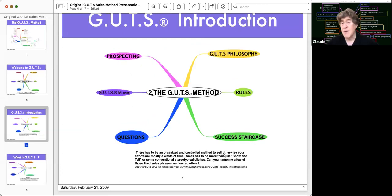There has to be an organized control method to sell, otherwise your efforts are mostly a waste of time. Sales has got to be more than just show and tell, or some conventional stereotypical cliches. Can you think of a few of these tired phrases and things that salespeople use? They use scripts, they ask for the order five times or more, they give premature presentations, they talk all about everything except ask the questions to find out what is the true need of the prospect, do they qualify, do they have the authority to make a commitment, is it timely, and do they have the character to keep that commitment? Also, all of this is so important.